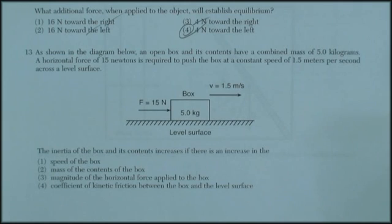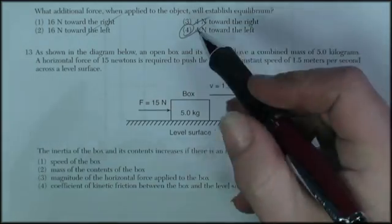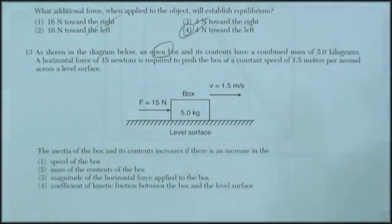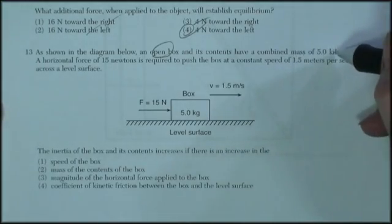And finally for this page, question 13. As shown in the diagram below, an open box and its contents have a combined mass of 5 kilograms. Why did they tell you it's an open box? Well, let's see what happens to it. A combined mass of 5 kilograms.